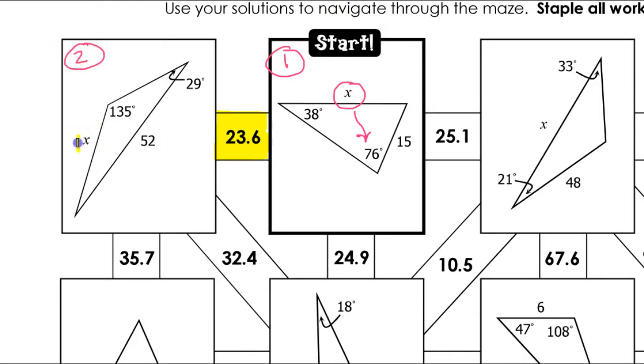But let's go ahead and call this now problem number two. We are looking for x, and that is across from the 29 degrees. So let's start with that. Sine of 29 over x. That will be our first fraction.